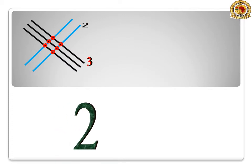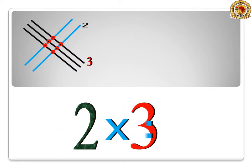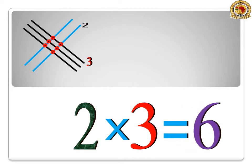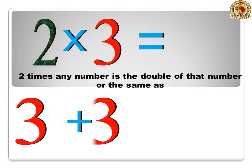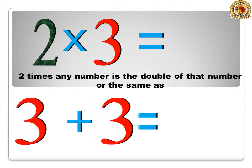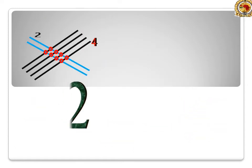2 times 3 is equal to 6. 2 times any number is the double of that number, or the same as 3 plus 3 is equal to 6.